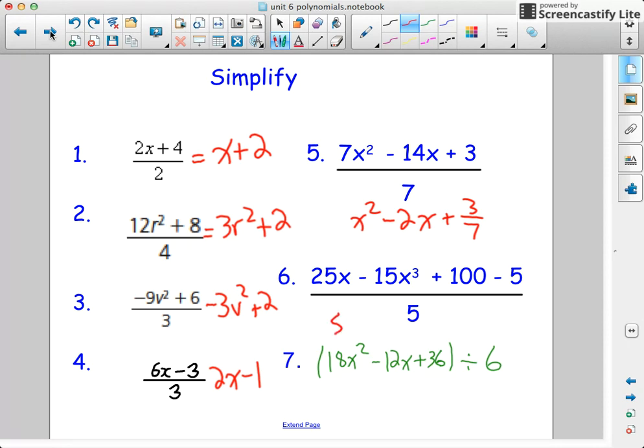This one I would have 5x minus 3x squared plus 20 minus 1. You could simplify those to just make it 19 though. And finally here you'd have 3x squared minus 2x plus 6. That is multiplying and dividing by a constant.